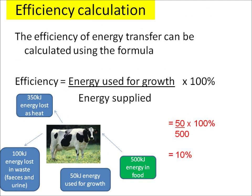As energy passes up the food chain, some of it gets lost — either lost as heat energy through respiration, or lost in waste as faeces and urine. We can actually calculate the efficiency of the energy transfer by looking at the energy going in, that's the energy in the food, and the energy coming out — the useful energy, which is the energy used for growth.